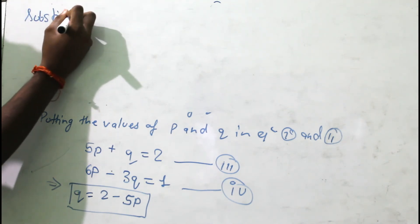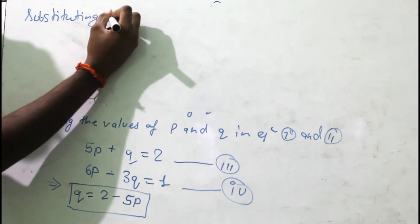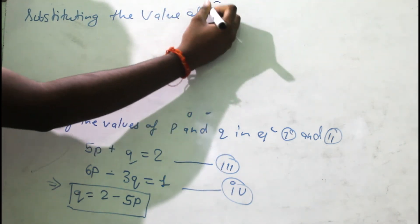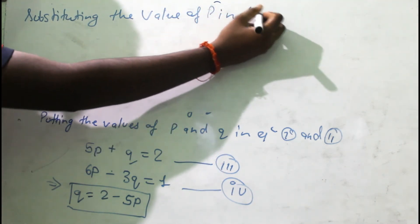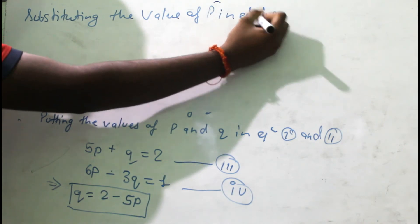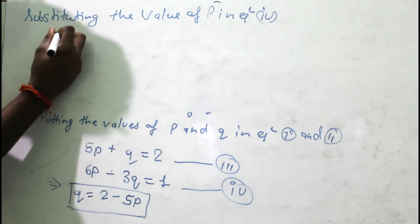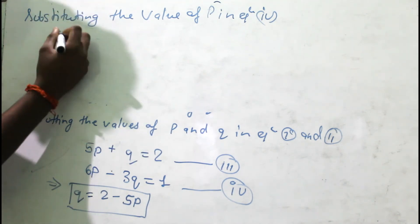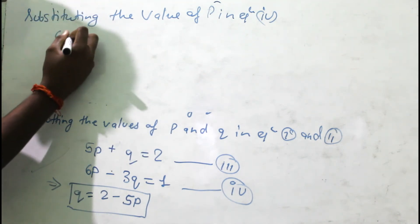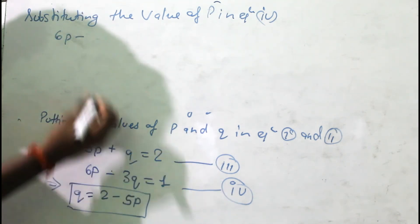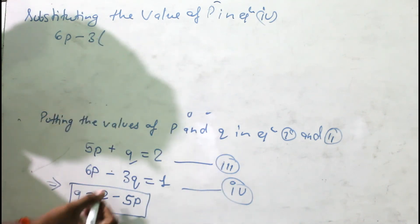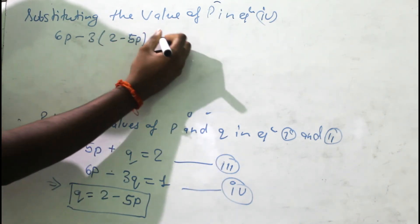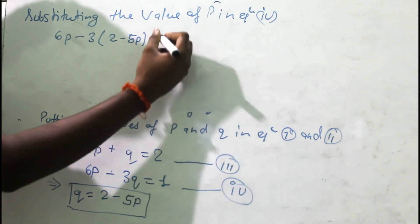Substituting the value of p in equation four: putting q = 2 - 5p into the equation, we get 6p - 3(2 - 5p) = 1.